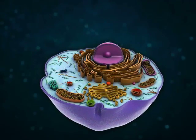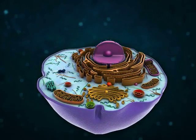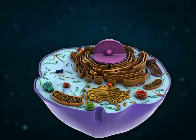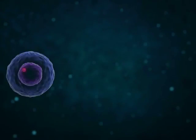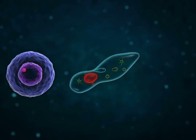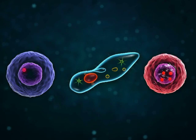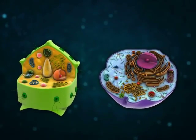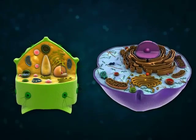Usually, cells contain a single nucleus, but the number of nuclei may vary from cell to cell. According to the number of nuclei, cells are recognized as uninucleate, binucleate, and polynucleate cells. Most plant and animal cells contain a single nucleus and are known as uninucleate cells.